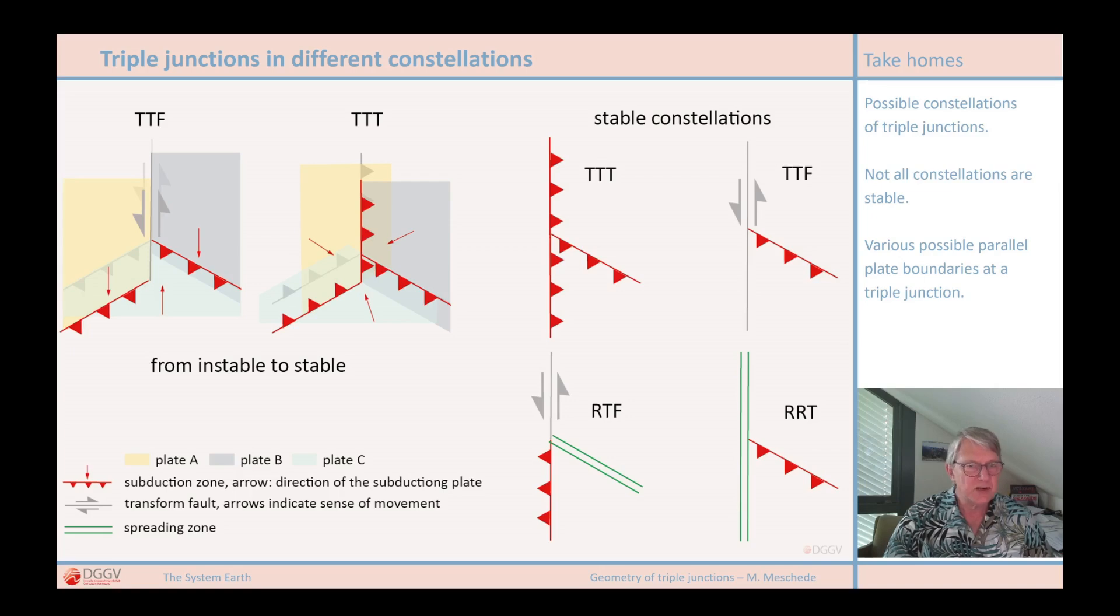In all cases, two plate boundaries run parallel to each other at the triple junction. This is one of the most common types of triple junctions.